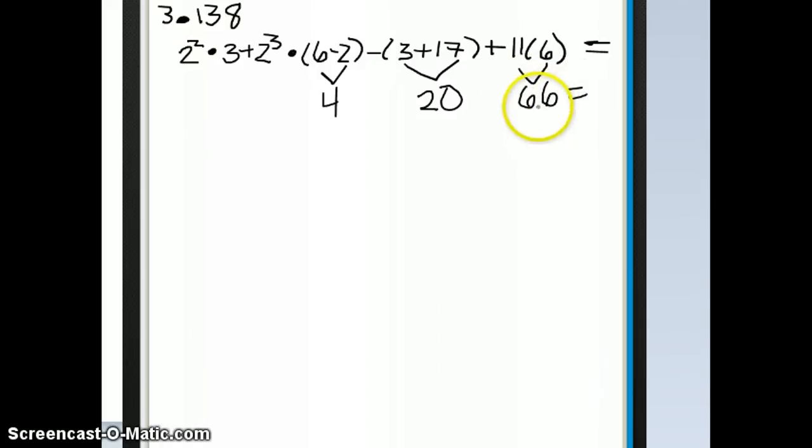So now that we've solved all of the sets of parentheses, I'm going to copy the rest of the problem just like it was. So here we have 2 squared times 3 plus 2 to the third. I need to bring down this multiplication symbol, bring down this subtraction symbol, and bring down the plus sign here.